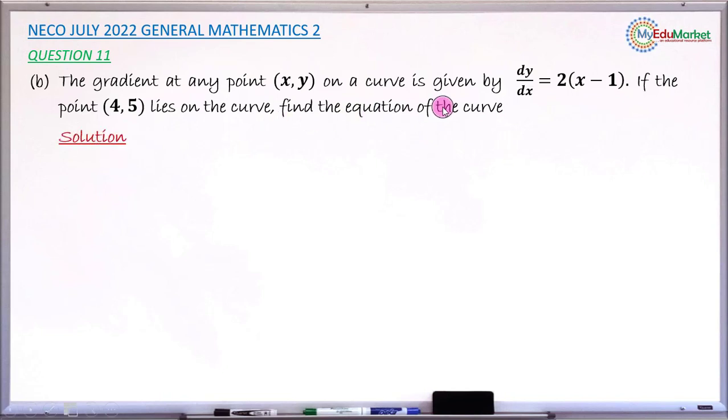Going back to the question, we have the derivative of the curve and that derivative is 2 into (x minus 1). It is the curve that we want to find. So now reverse this differentiation. The reverse of differentiation is nothing but the integral.